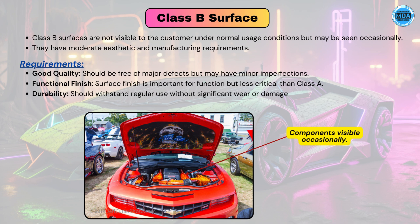For example, under the hood there are different components — those components are Class B surfaces. Under normal conditions they are not visible, but if you open that part you can see the inside components. Those inside components are the Class B surfaces.